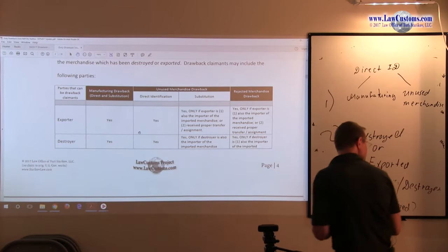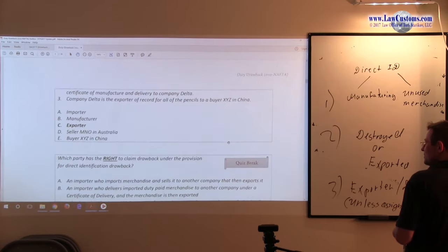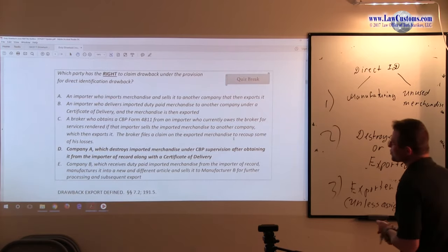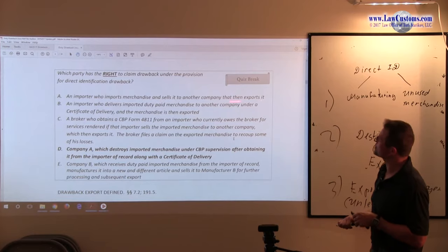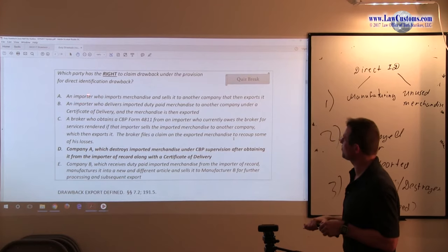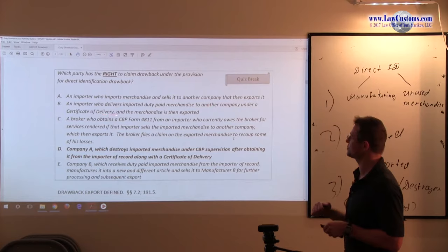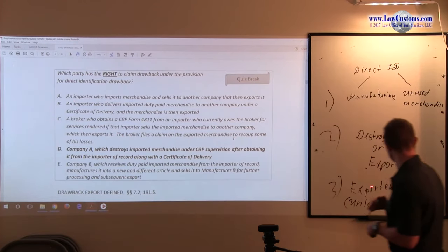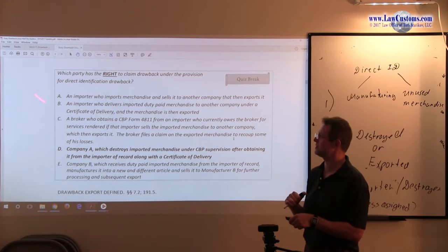Let's go through the list and check which one fits. Option A: an importer who imports merchandise and sells it to another company that then exports it. An importer is not a default party, so A is incorrect. Option B: an importer who delivers imported duty-paid merchandise to another company under certificate of delivery and the merchandise is then exported. There is no assignment here and it must be the exporter or destroyer, so B is incorrect.